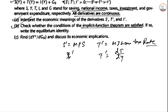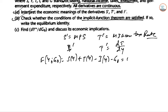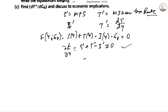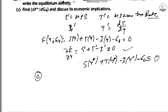Second part: check whether the conditions of the implicit function theorem are satisfied. Writing the equilibrium condition as F(Y, G₀) = S(Y) + T(Y) − I(Y) − G₀ = 0. We find F has a continuous partial derivative: ∂F/∂Y = S' + T' − I', which is not equal to zero. So the implicit function theorem is applicable, and the equilibrium identity is S(Y*) + T(Y*) − I(Y*) − G₀ ≡ 0.